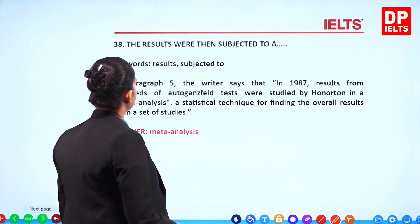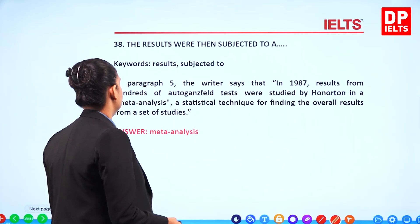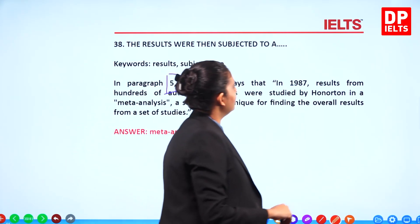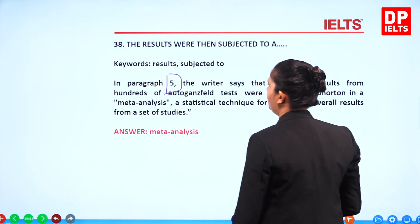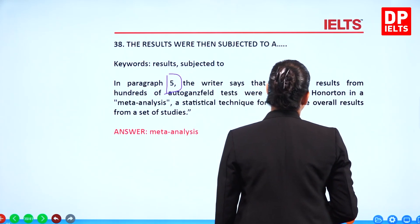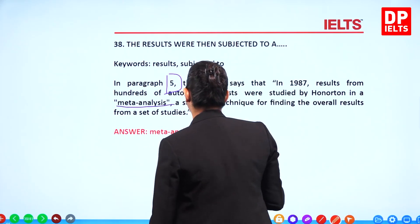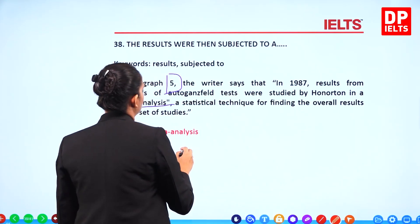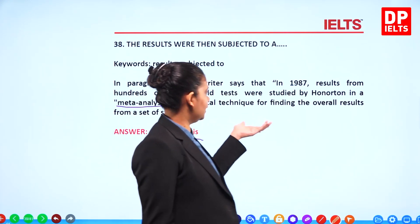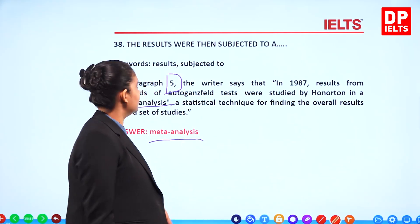Question 38: 'The results were then subjected to a...' In paragraph 5, the writer says that in 1987, results from hundreds of Auto-Gansfeld tests were studied by Honorton in a meta-analysis — a statistical technique for finding the overall results from a set of studies. So the answer is 'meta-analysis'.